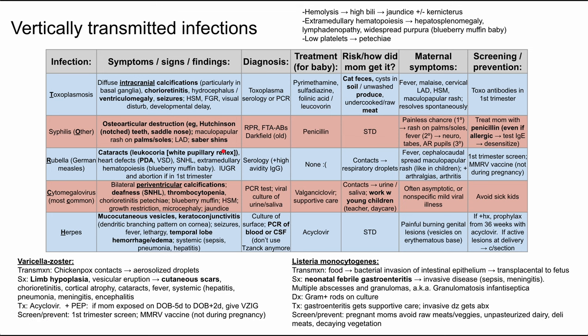This is a video on vertically transmitted infections, or infections that can spread from the mother to the fetus during pregnancy. These are classically known as TORCH infections, where TORCH is an acronym: T is for toxoplasmosis, O is for other which includes syphilis, R is for rubella, C is for cytomegalovirus, and H is for herpes.